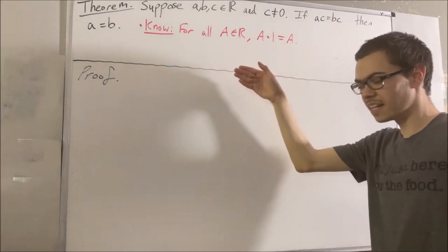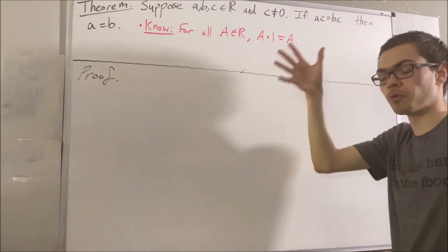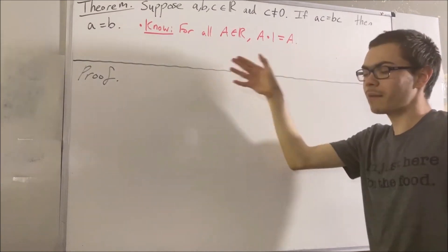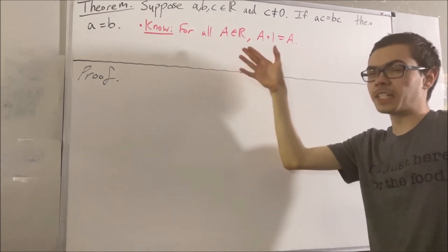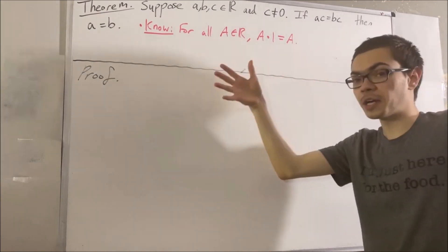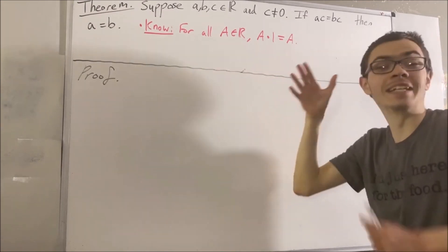And the second is that every non-zero number has a reciprocal. And what that means is, for every non-zero real number X, there exists a real number Y such that X times Y is equal to 1.